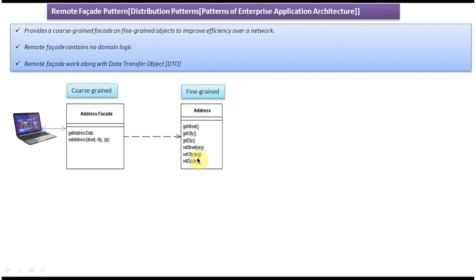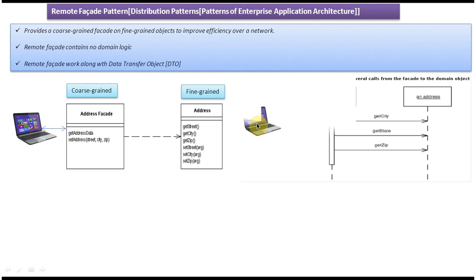Suppose the client makes a call to the address packet to get the address data. What the address packet will do is span multiple requests to the address domain object to get the city, state, and zip information. Once it gets that information, the address packet will formulate the address information and send it back to the client.